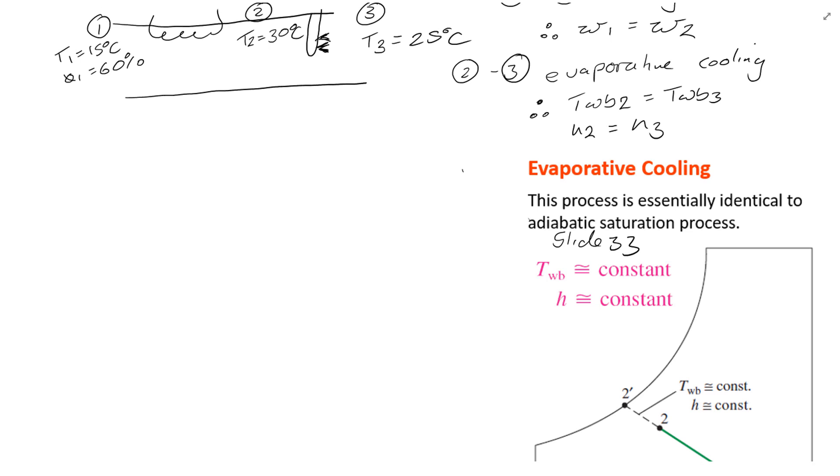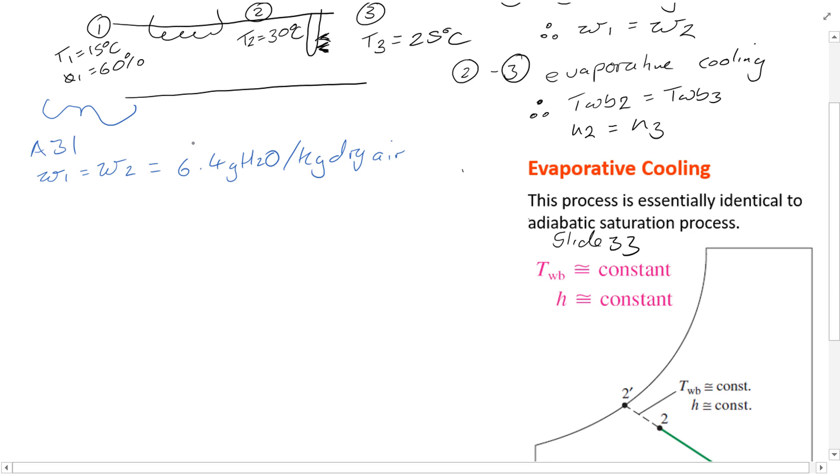So you've got these values here, T1 and T2. Using chart A31, you're able to find omega 1, which is equal to omega 2, which we find to be 6.4 grams H2O per kg dry air. Of course, you're going to need to convert this to kilograms later on.